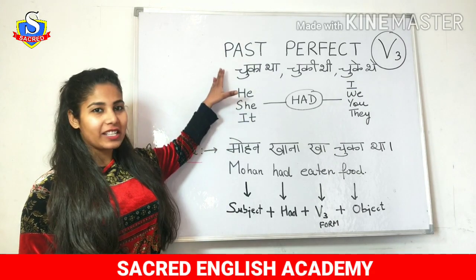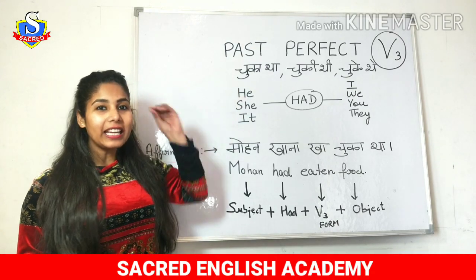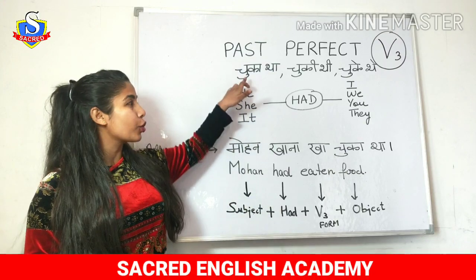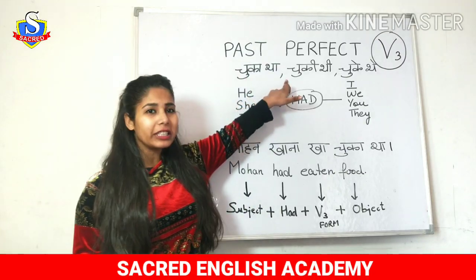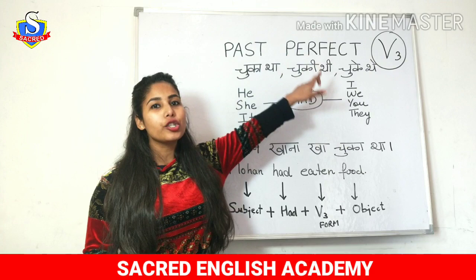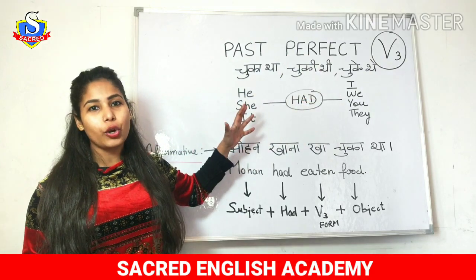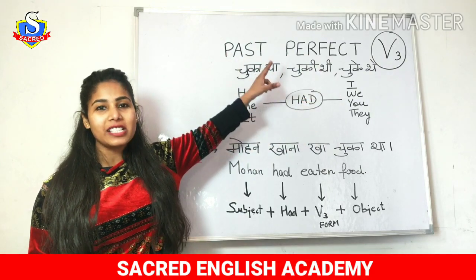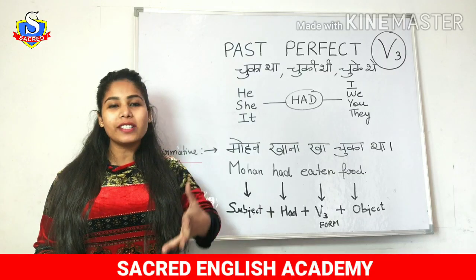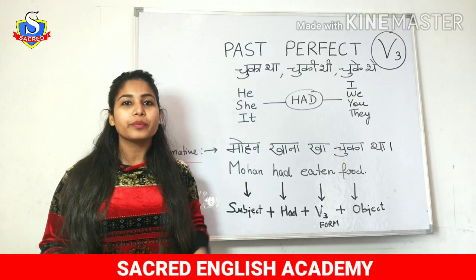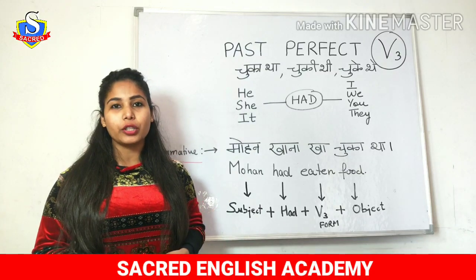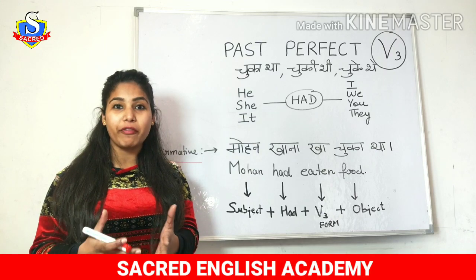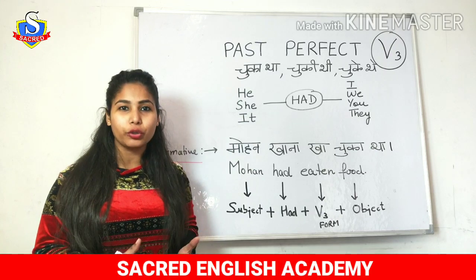Past perfect tense: anything that ends with 'chuka tha', 'chuki thi', or 'chuke the' - wo tenses jo hote hain, wo past perfect tense hote hain. In other words, ab main aapko doosri taraf se bhi samjhati hoon - doosre tariqe se kaise pehchaan sakti hain aapki past perfect tense kaunse hote hain.